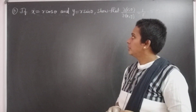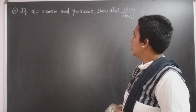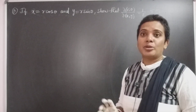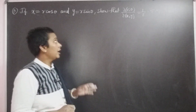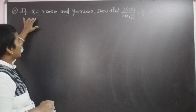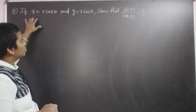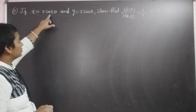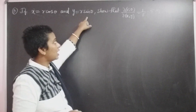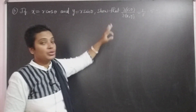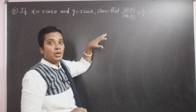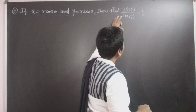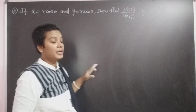Good morning friends. Today I am going to discuss about the Jacobian function. Here the function x and y are both defined in the r and theta functions: x equal to r cos theta and y equal to r sin theta. Then we can show that ∂(r, θ)/∂(x, y) equal to 1 by r.